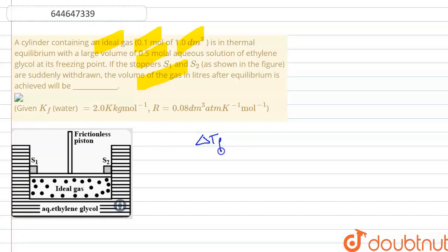Now from this we will calculate the difference in the temperature, that is delta Tf, which is equal to Kf into m. So the value of delta Tf will come out to be 0.5 into 2, so the value will be equal to 1.